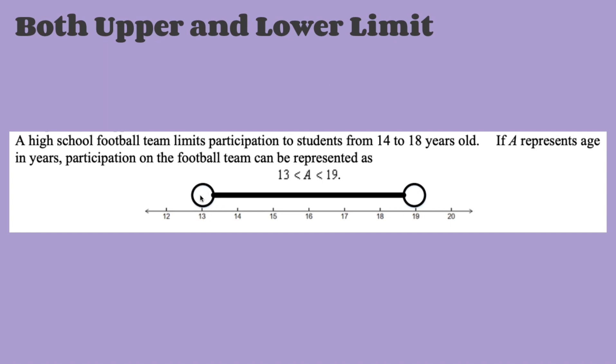So here, we're starting off with 13. Open circle, because this is less than. And then we have our age, our variable, and we stop right here. So 19 is also less than, so we have our open circle. Now, in both upper and lower limit questions, this can also be less than, and then less than and equal to. So if they were to say that a high school football team limits participation to students from 14, but 18, but if you're 19, you can join the football team, we would put less than or equal to 19.